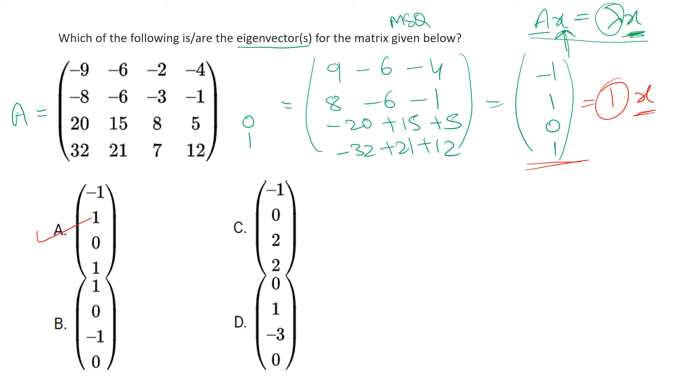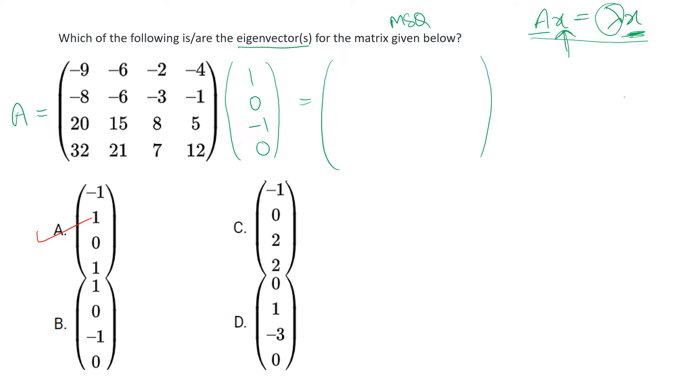Now let us check for the remaining options. We will be following the same procedure for all of them. Let us substitute x equal to option B. So now our x will become one, zero, minus one, and zero. Now when we will take their product, here second and fourth both are zero so we'll just cross them out to save time.